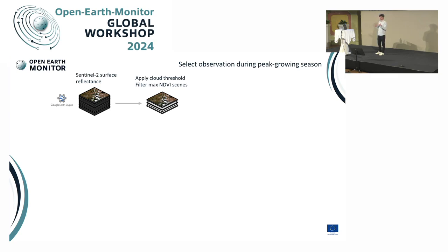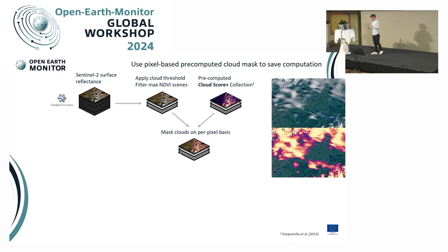We also apply a threshold so the tile-level NDVI cannot be below a certain fraction of the highest value. We mask out all agriculture in these NDVI calculations because we are not interested in the patterns of irrigated crop plants — we really want to capture natural vegetation. We then combine this with the pre-computed CloudScore Plus collection to remove all clouds and artifacts in the images, giving us a smaller stack of masked Sentinel-2 observations.